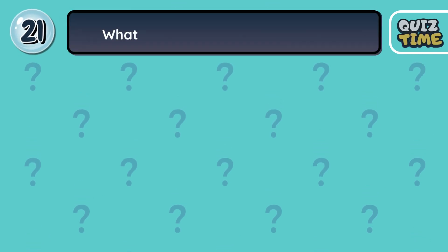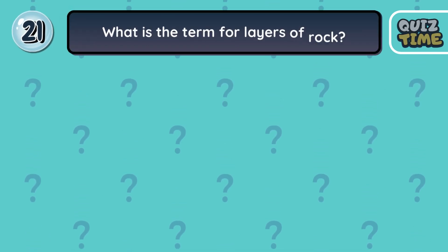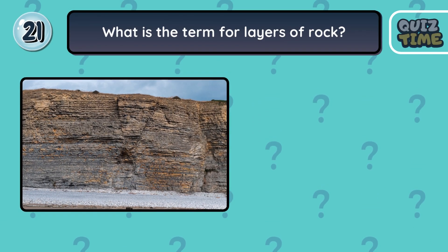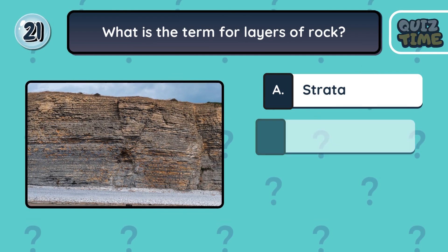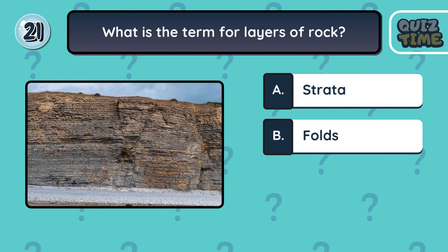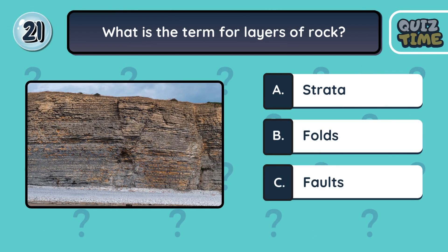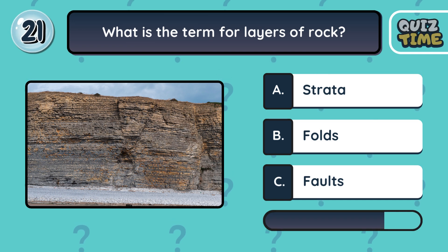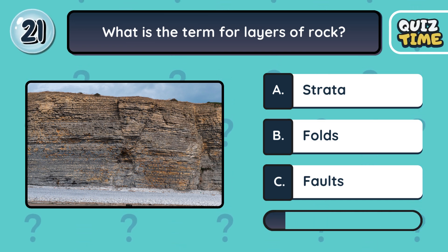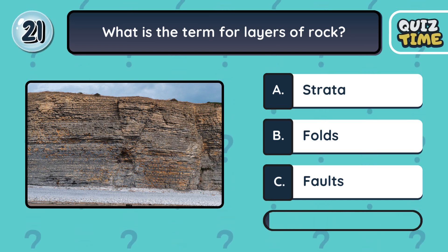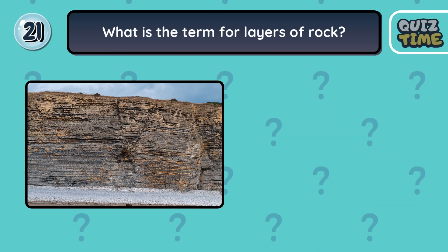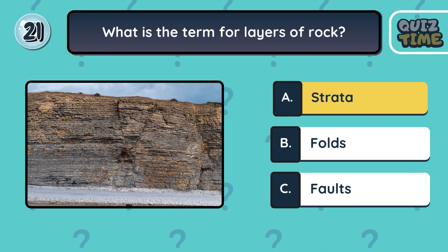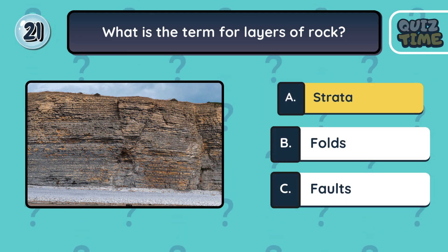Number 21. What is the term for layers of rock? A. Strata. B. Folds. C. Faults. The correct answer is A. Strata.